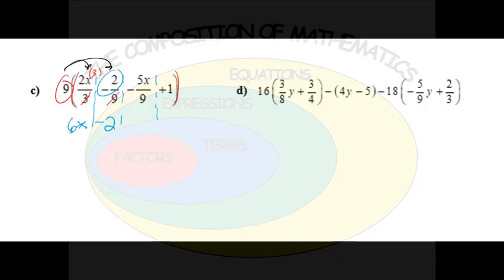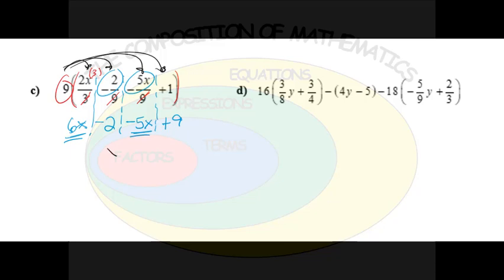Distributing to the next term, the 9s cancel leaving just a factor of 1, so we have just negative 5x from that term. Finally I distribute to the last term, 1 — there's nothing to cancel but I multiply: 9 times 1 is 9. The fractions are cleared and I have four terms. Combining like terms: 6x and negative 5x combine to x, and negative 2 and positive 9 gives positive 7. So we get x plus 7.